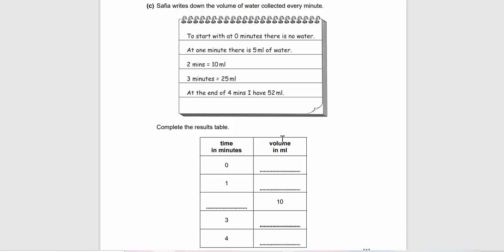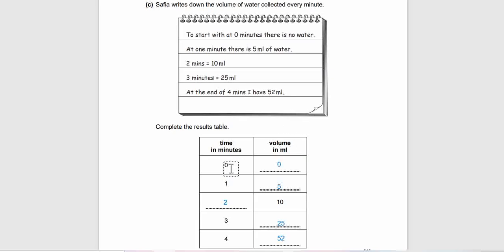Question 6c: Sophia writes down the volume of water collected every minute. To start with, at zero minutes there is no water. At one minute there is 5 milliliters of water, two minutes 10 milliliters of water, three minutes 25 milliliters of water. At the end of four minutes there's 52 milliliters. Complete the results. It's easy, just move the data. Here's the example of correct answer: zero is zero, one is five, two is ten, three is 25, four is 52. As easy as that.